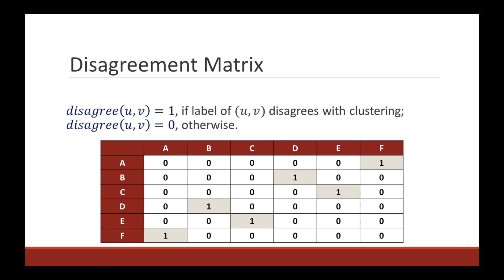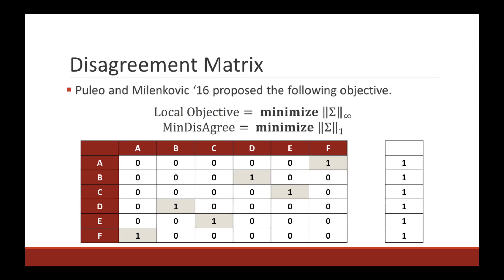To this end, we define the disagreement vector which lists how many edges disagree with our clustering at each vertex. Then we can think about minimizing the norm of this vector in Lq space. The classical correlation clustering problem minimizes the L1 norm, while the min-max version minimizes the L-infinity norm. By looking at norms in between, such as the L2 norm, we can find clusterings that give a more balanced perspective on our data.